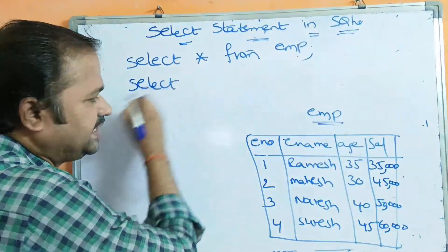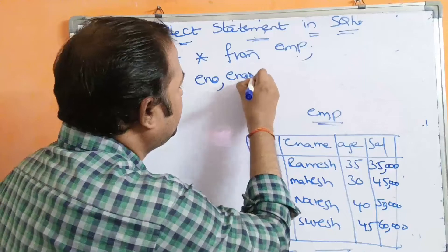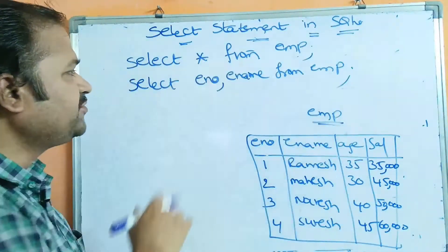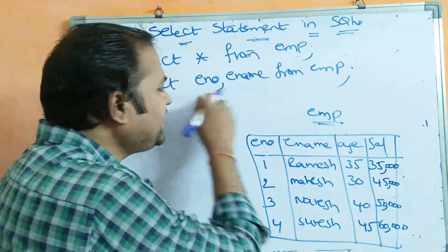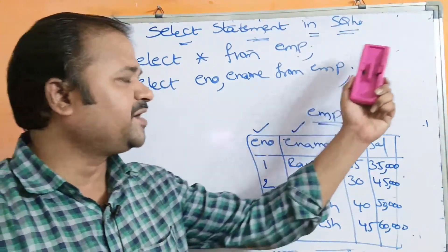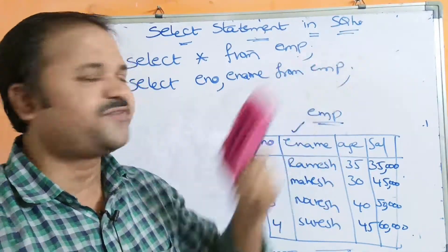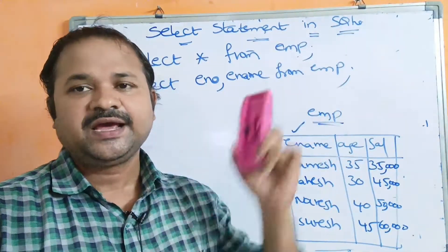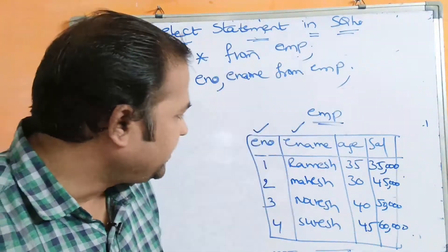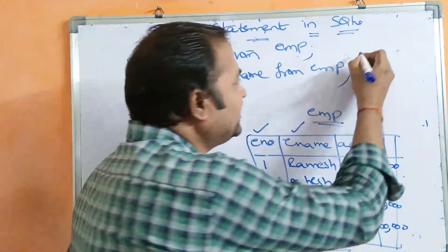For the second example, let us see: SELECT enum, ename FROM employee. Whenever we use this statement, only the employee number column as well as the employee name column will be displayed from the employee table — only these two columns will be displayed.